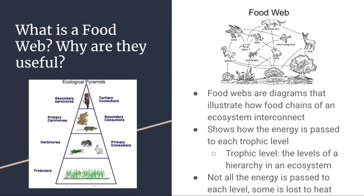This shows how energy is passed to each trophic level. Trophic levels are the levels of a hierarchy in an ecosystem, starting with the producer going all the way up to the apex predator and the decomposers.